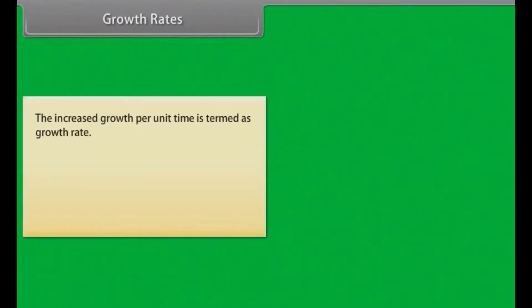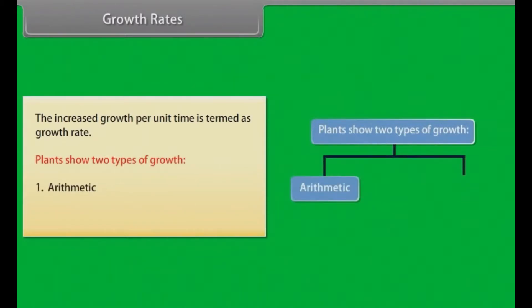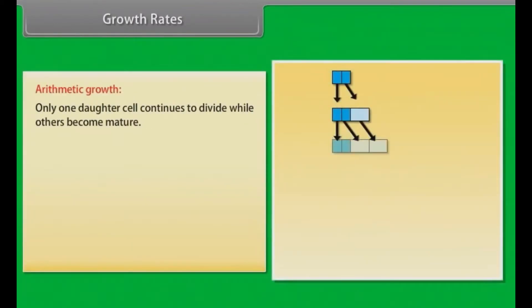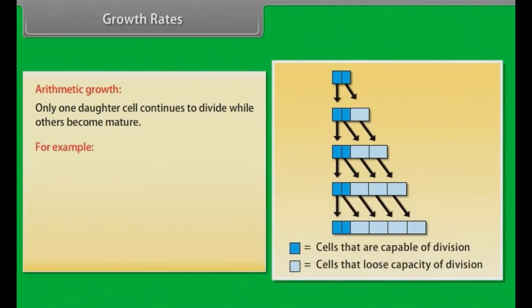Growth rates. The increased growth per unit time is termed as growth rate. Plants show two types of growth: arithmetic and geometric. Arithmetic growth: only one daughter cell continues to divide while others become mature. For example, root elongating at a constant rate.